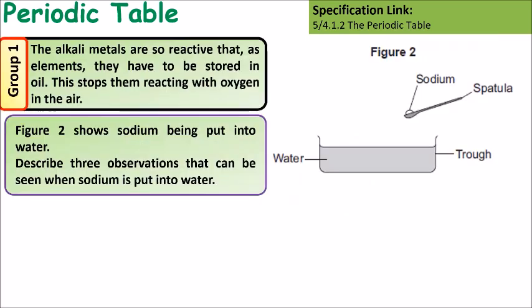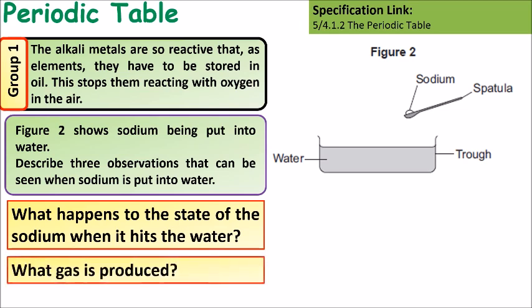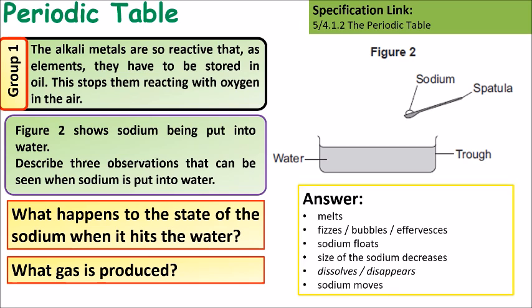If we look at this example, figure 2 shows sodium being put in water. Describe 3 observations that you can see when sodium is put into water. Remember you'll need to state what happens when sodium hits the water. Think about what gas is produced. Some things you could include in the answer would be: it could look like it's melting, it would give off bubbles, the sodium would float around the surface, the size of the sodium would decrease as it dissolves, and hydrogen gas would be given off.